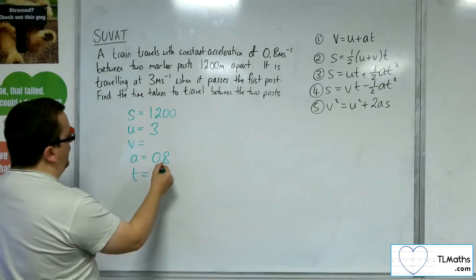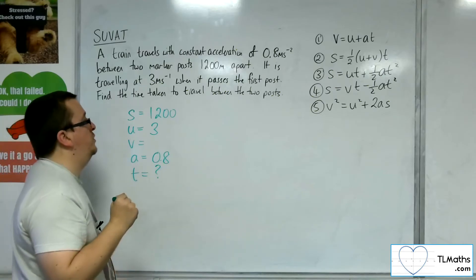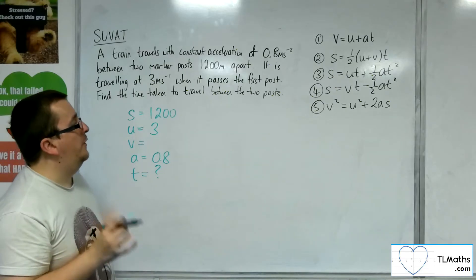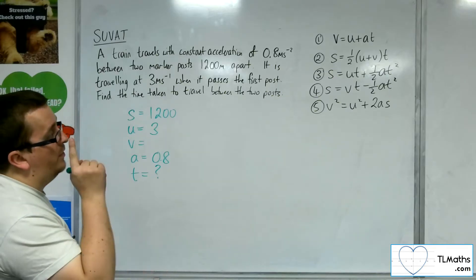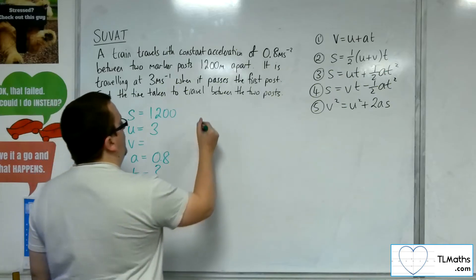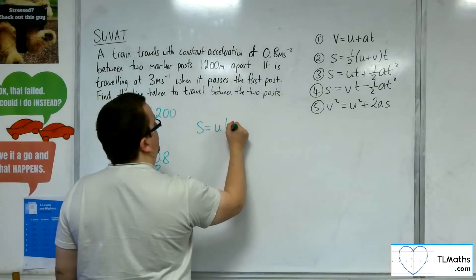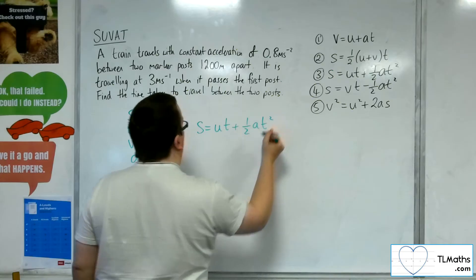We want to find the time taken between the two posts. I don't know the final velocity, so I'm looking for an equation that doesn't have the final velocity, which is number 3. So S equals UT plus 1 half AT squared.